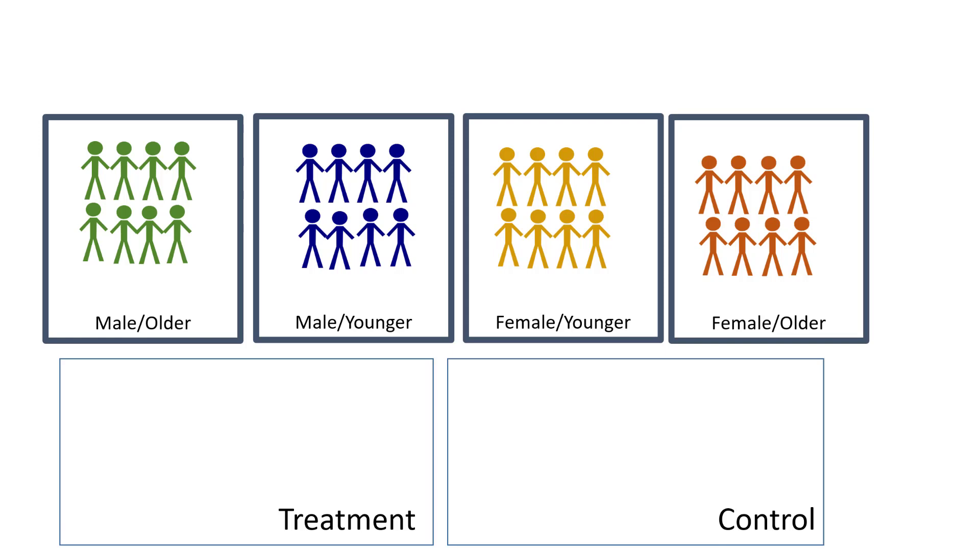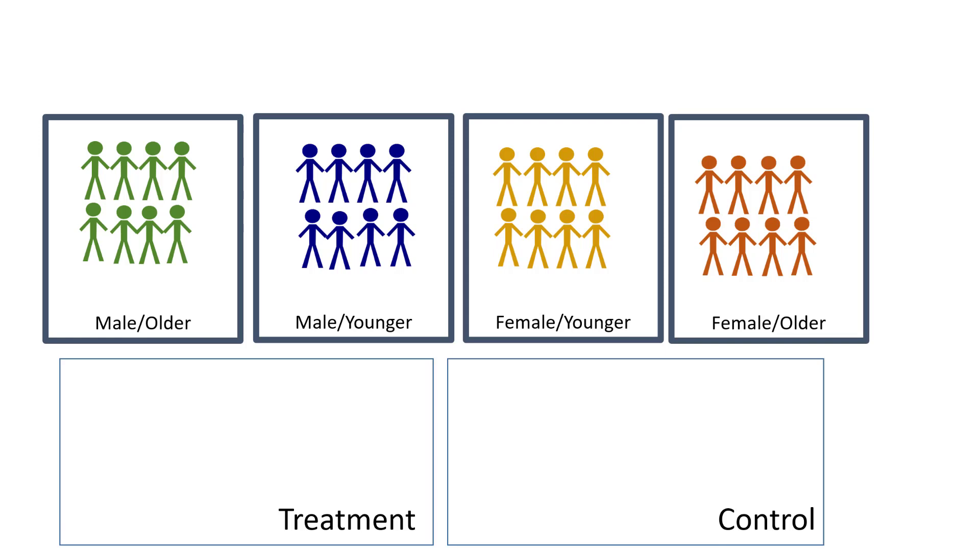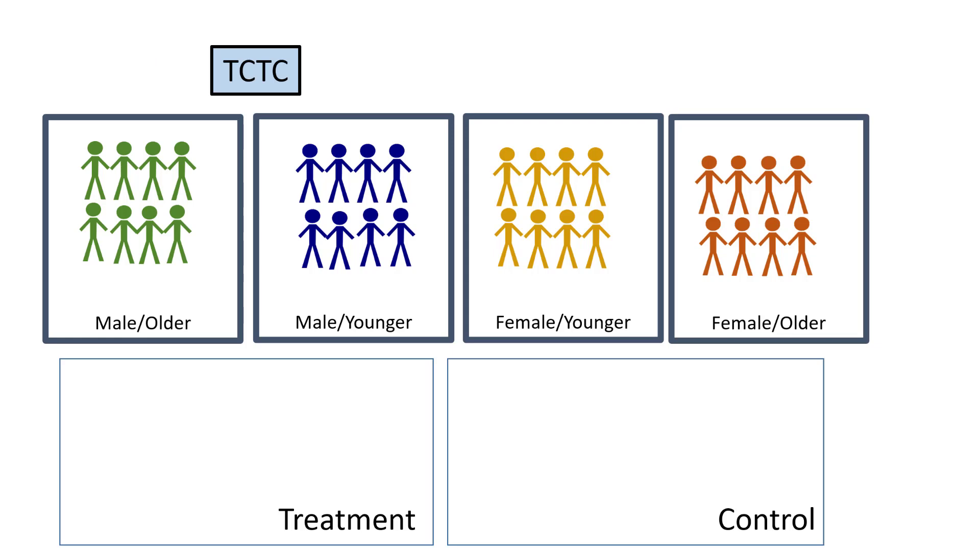What we would do is within each strata perform block randomization. So we're going to do the first strata first, male and older, and we've drawn T-C-T-C. So we go treatment, control, treatment, and control.